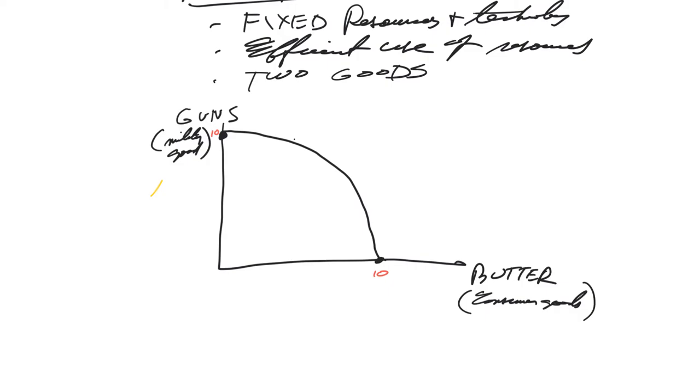Anywhere on the curve is efficient. That's the maximum. Anything outside the curve, let's say right there, is unattainable. Point B, we'll call it. Point B. You can't be at point B. Point B. This is the maximum. This is the maximum you can produce. You can produce any combination.